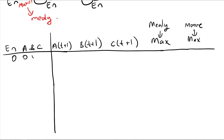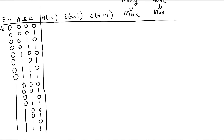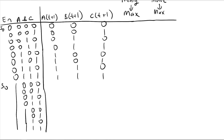Writing all 16 possibilities: if the enable is 0 and the state is 000 (s0), the next state is again 000. With enable 0, in all rows we stay on the same state. If the enable is 1 and I am in s0, the next state is s1 (001). From s1 with enable 1 we go to s2, then s3, s4, s5, s6, s7, and from s7 back to s0.